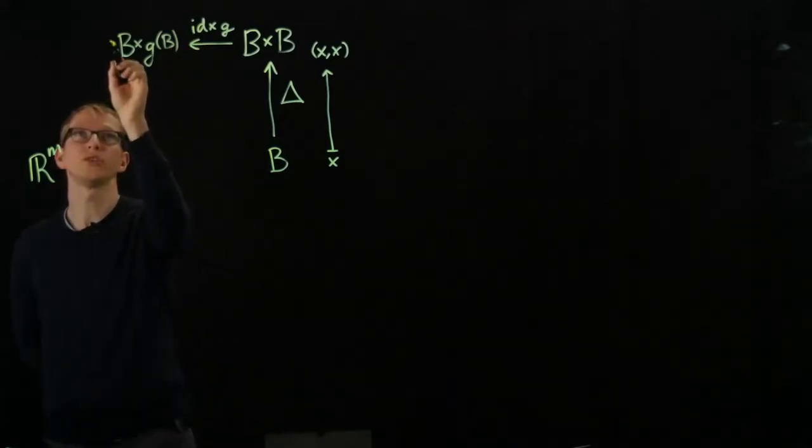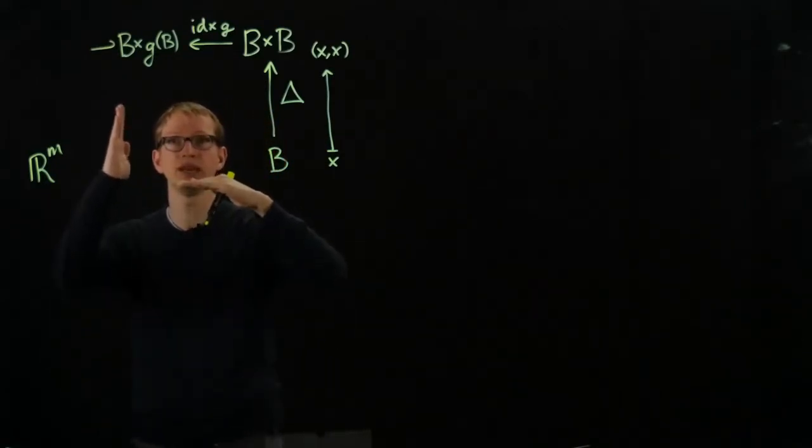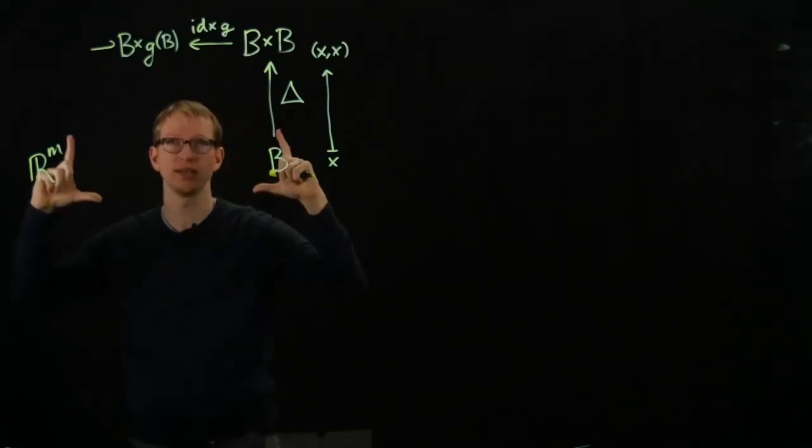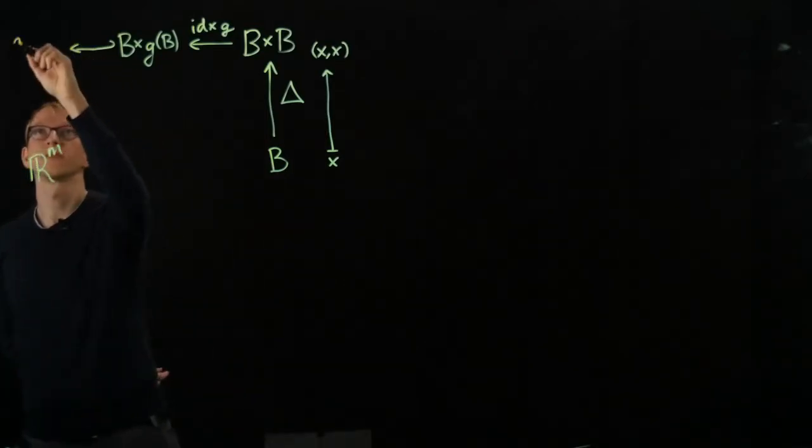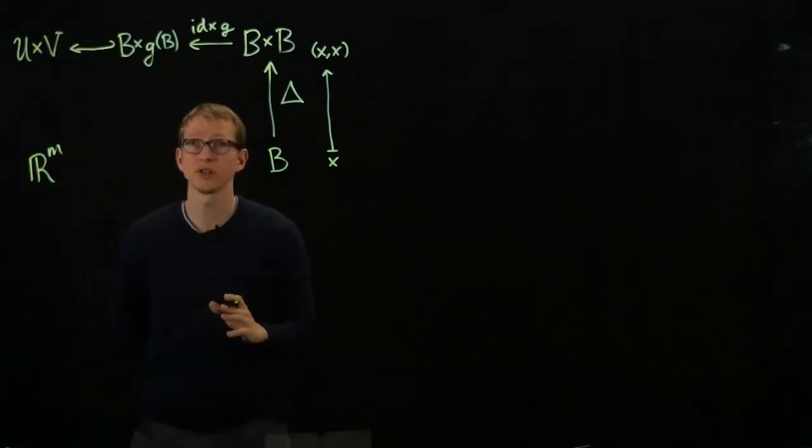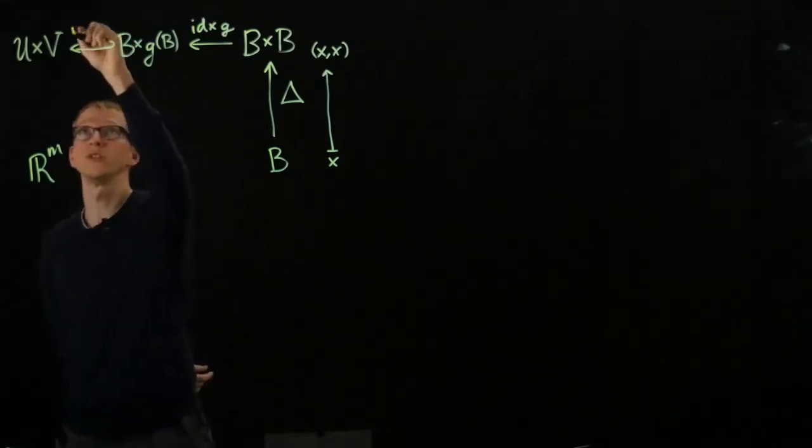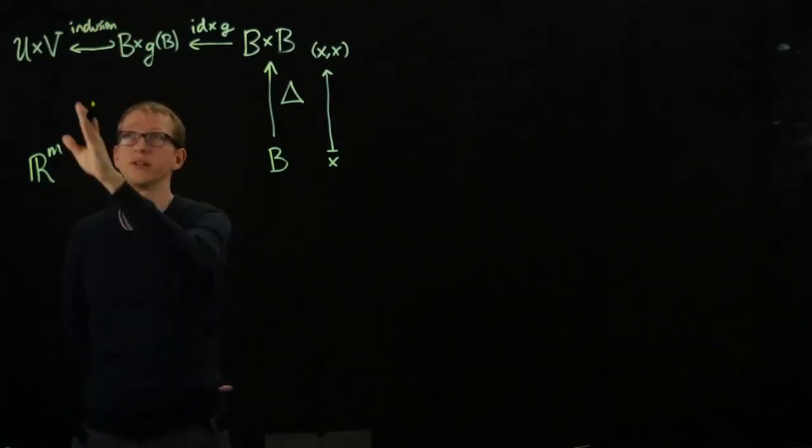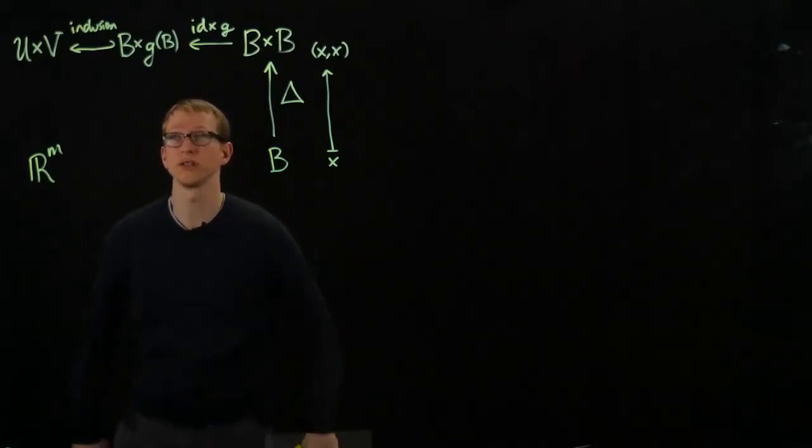And then we can include this, if we remember the picture that we had before, we had this rectangle B and the image of G, and that rectangle was contained in the larger rectangle of U and V. So this is U cross V. And our function, so this hook arrow just denotes the fact that this is the ordinary inclusion. You can think of it as the identity, but this is a different domain, so we call it the inclusion because the co-domain is larger than the domain.